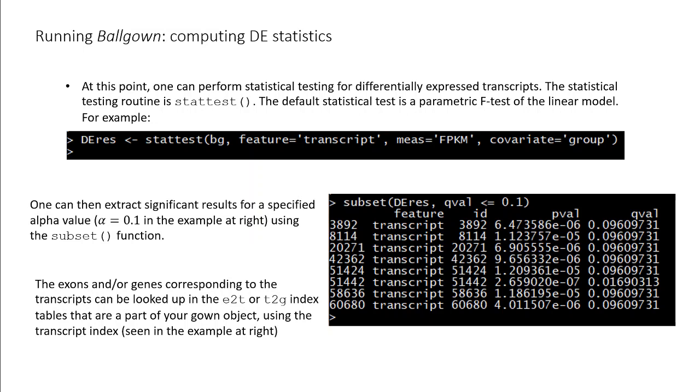Finally, if you'd like to look up the log-fold changes for these significant transcripts, the information is stored in the expr component of the gown object, and can similarly be looked up using the transcript ID.